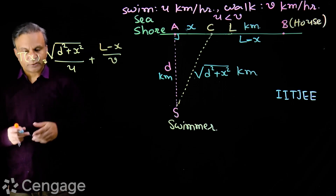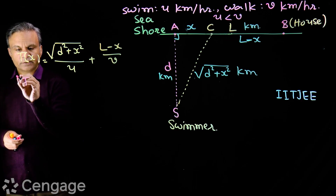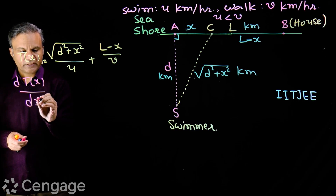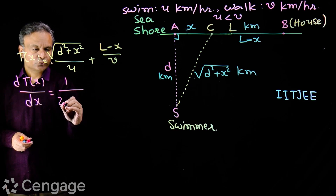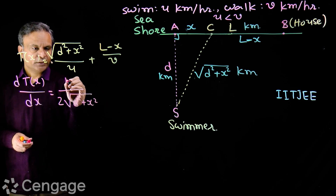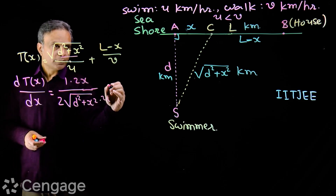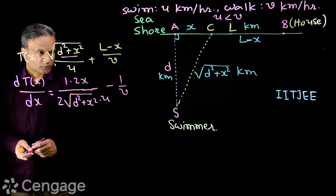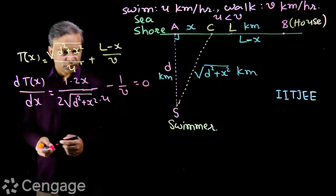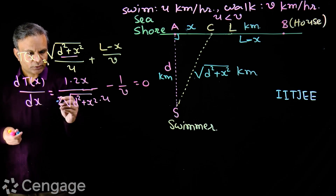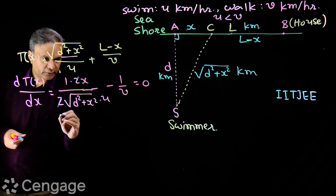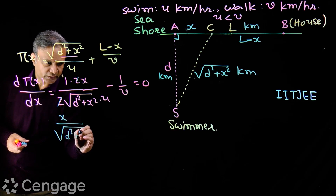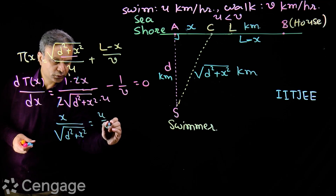To find the minimum value of this function, we differentiate with respect to x. We get dT/dx = (1 / (2√(d² + x²))) × 2x / u − 1/v. Setting this equal to zero for the point of minima, and simplifying (the 2 cancels), we get x / √(d² + x²) = u / v.